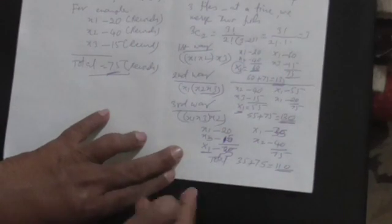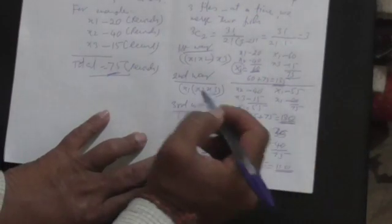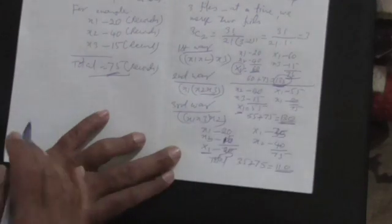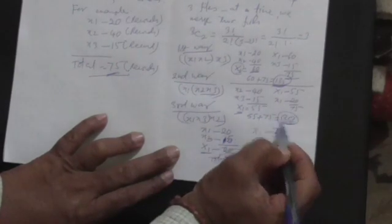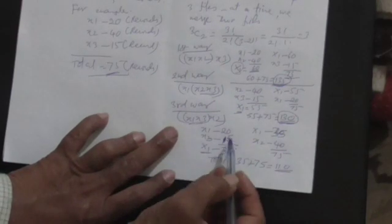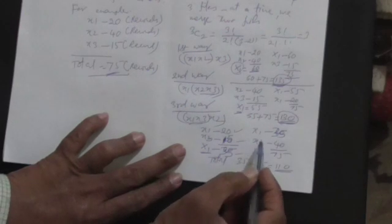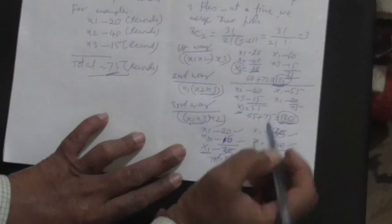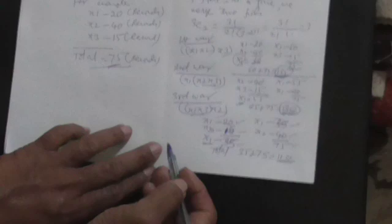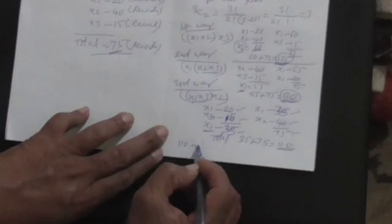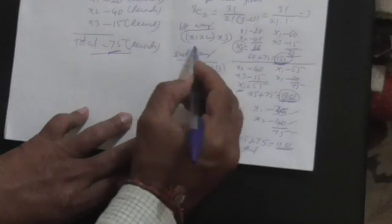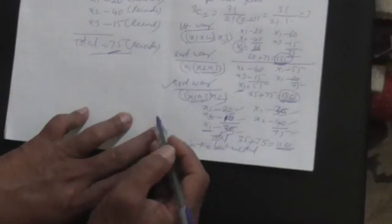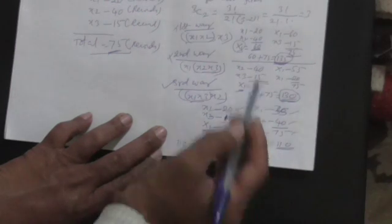When you merge in any of the methods, going by the first way you have taken 135, going by the second method where X2 and X3 are merged first then X1 is merged, it is 130. Going by the third way, X1 and X3 then X2, out of 135, 130, and 110, we find that 110 is the best option, the best method. The time taken executing this will also be less than the other two methods.